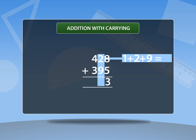Add tens place. 1 plus 2 plus 9 is equal to 12. Send 1 as carry to hundreds place and bring down 2.